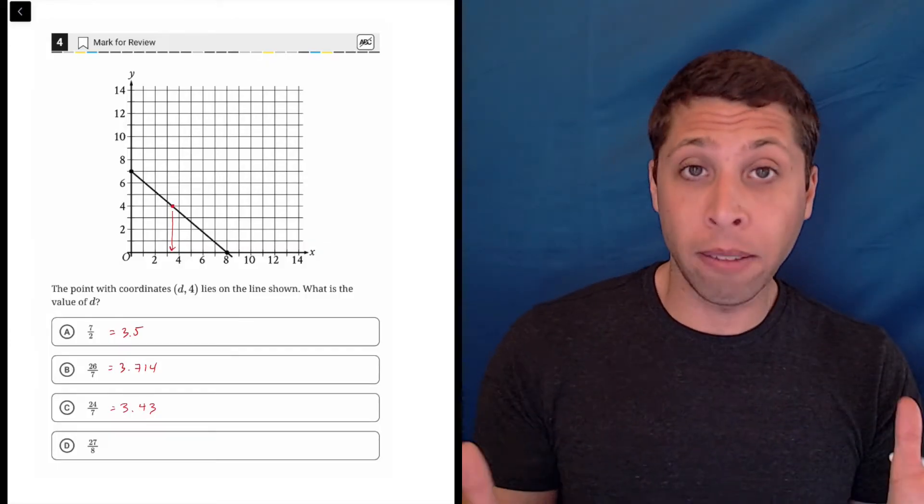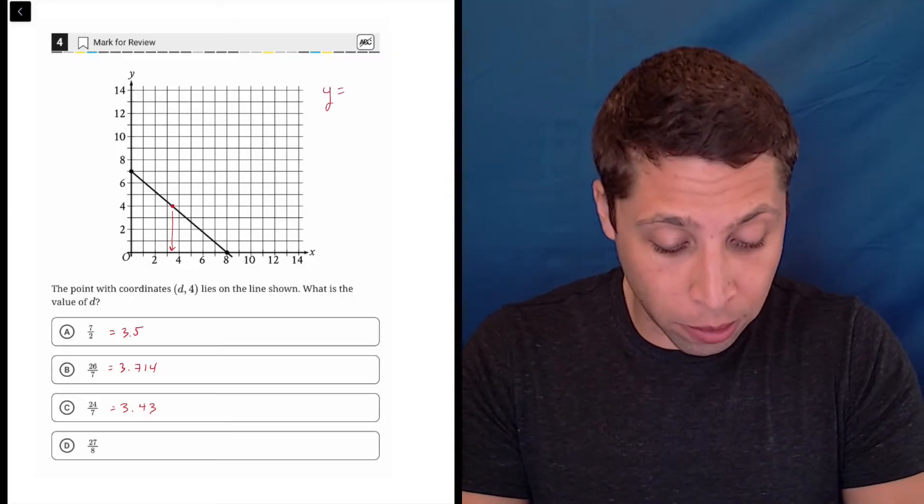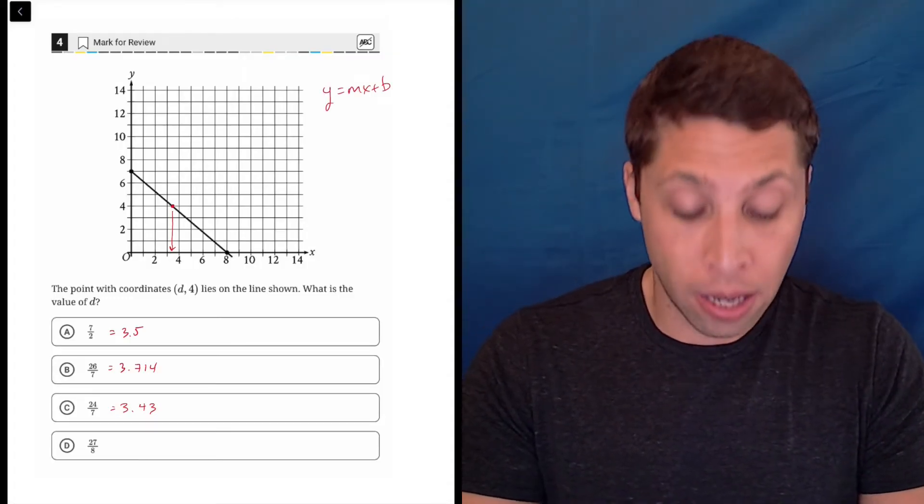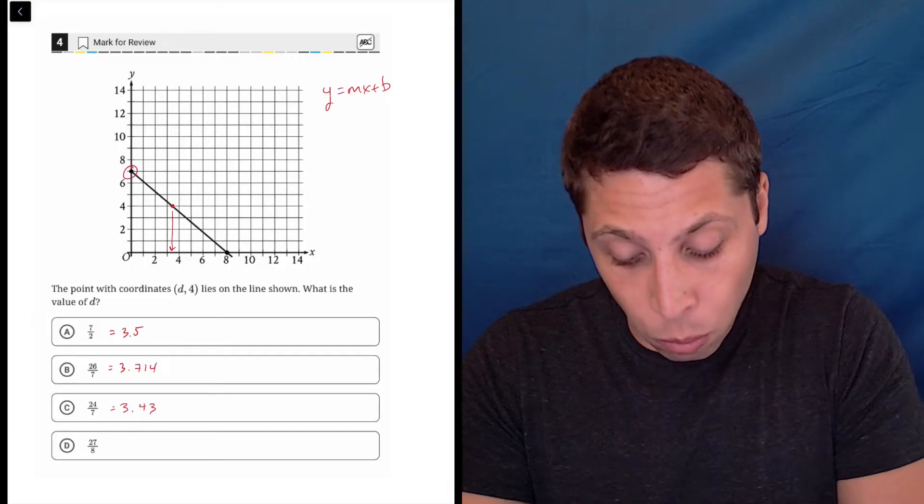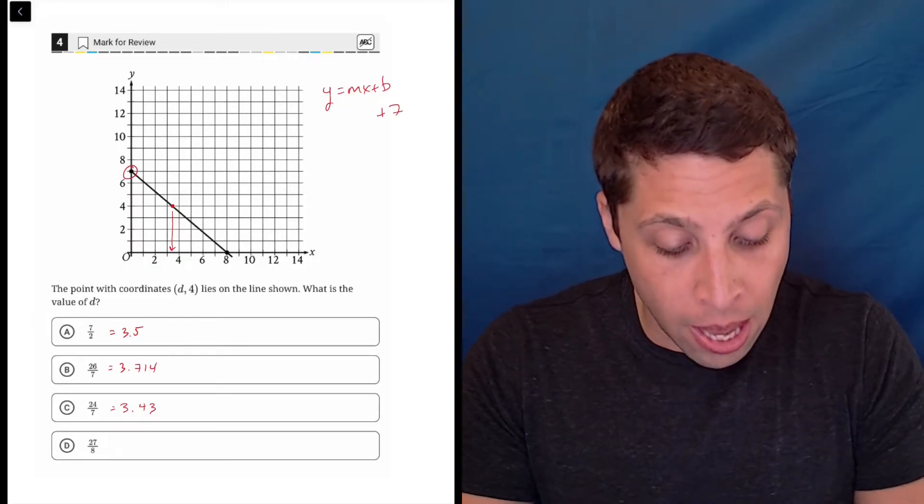So it's a line. What I would naturally do is just be like alright y equals mx plus b. That's kind of my go-to. The b is very obvious here. That's the y-intercept. That's seven.